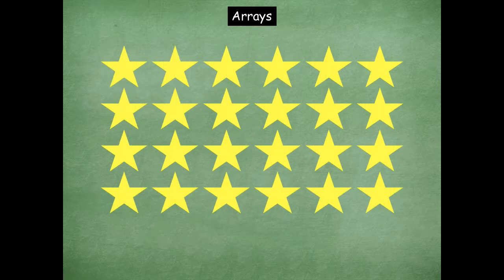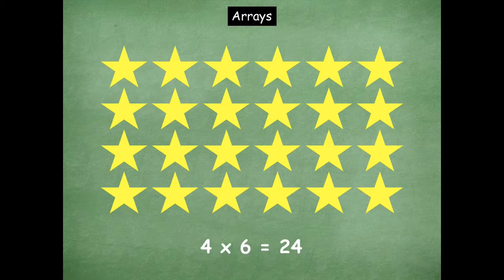Here's our next array. Think to yourself: how many rows are there and how many are in each row? Then tell me the product. Four times six — twenty-four is our product, because there are four rows with six in each row. You could also do six times four. Whichever way you feel more comfortable is fine.